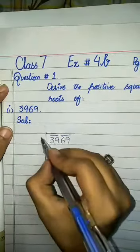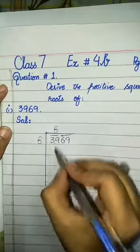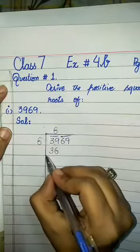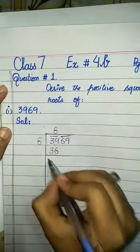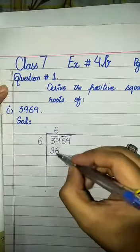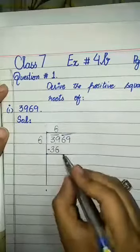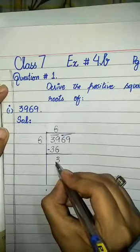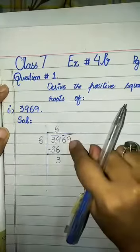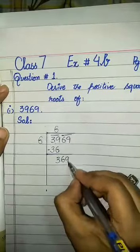So what we will do — we write 6 as our divisor and quotient. This is 36. We will draw the line and subtract 36 from 39, giving us a remainder of 3. Now we will bring down the next period — that is the next pair, 69.